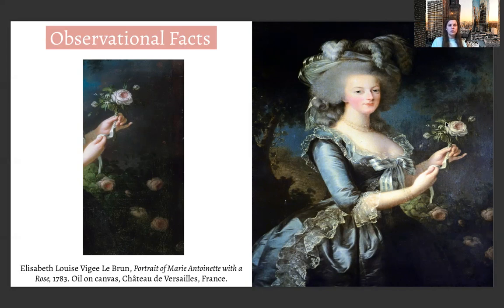The medium used in this painting is oil on canvas and the dimensions are 51 inches by 34 inches — about 4 feet by 3 feet, to give some perspective on the size. The function of the work is portraiture. Marie Antoinette loved getting her portrait painted, and I have more facts on that when I go over the artist herself.